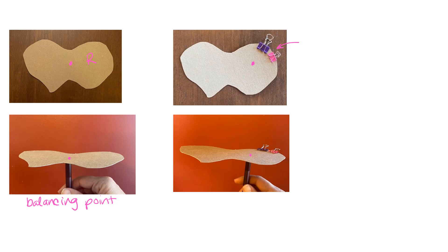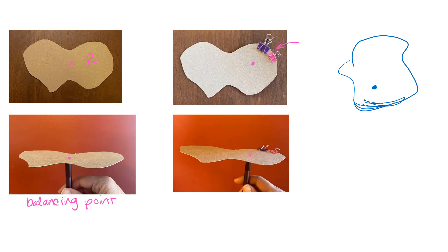This would be an example with non-constant mass density because of those extra binder clips on one side. For a three-dimensional object, you can think of the center of mass as the place where the object would be concentrated if you wanted to represent its larger geometry as a single point. If a 3D object has more mass toward the bottom, the center of mass would be closer to the bottom. We do this in things like motion in space, where we represent a whole planet as a single point at its center of mass.